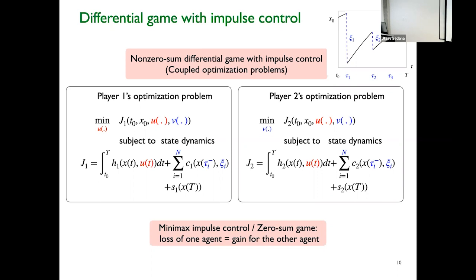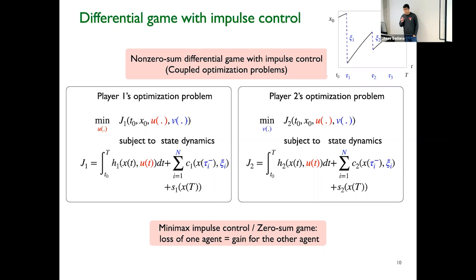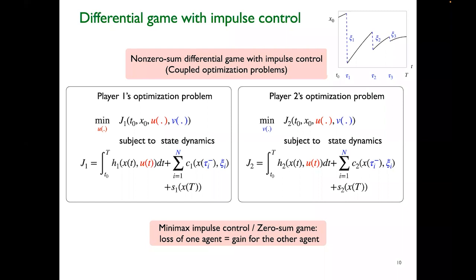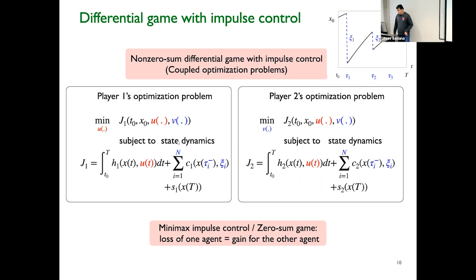Q&A: A question was raised about psi — how often it occurs or how strong it is. Player 2 determines the number of impulses — it is a decision variable, not random and not an external effect. Player 2 is choosing psi_i as their decision variable.